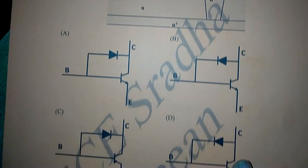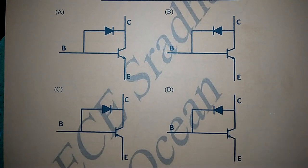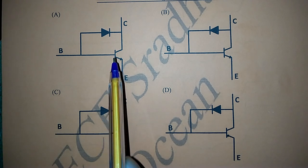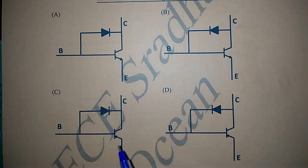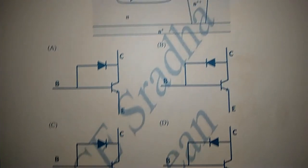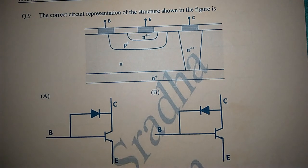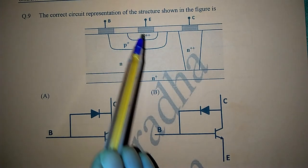But the problem is, if we observe the options, they contain both NPN transistor and PNP transistor. So the question is, what kind of BJT is there? If we observe the arrangement again, here collector and emitter are n-type materials and base is p-type material.